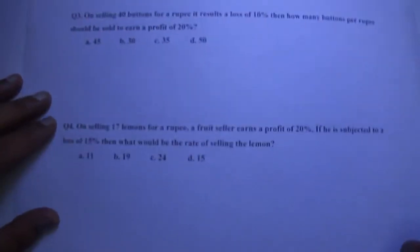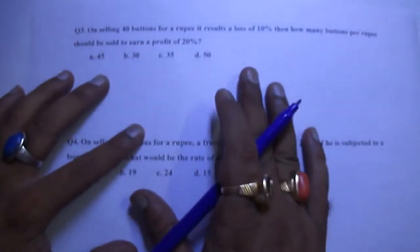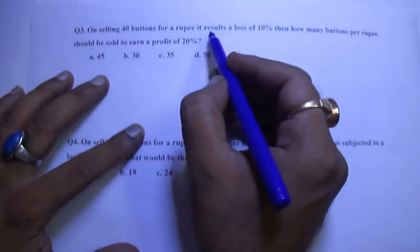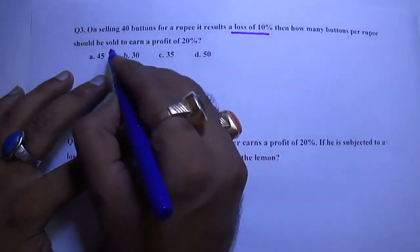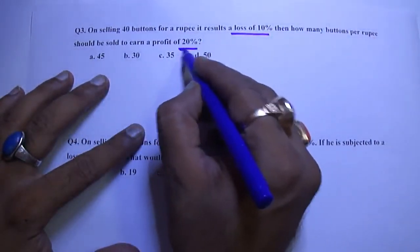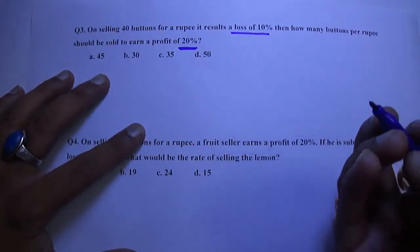One more example. This is a very good question. On selling 40 buttons for a rupee, it results in a loss of 10%. Then how many buttons per rupee should be sold to earn a profit of 20%? This question is very important. See the solution carefully.